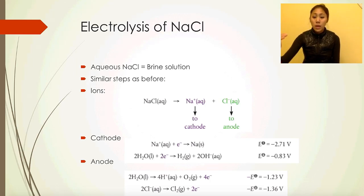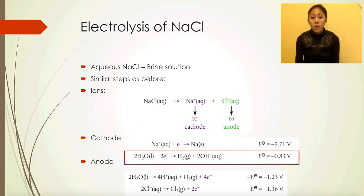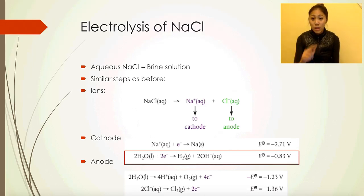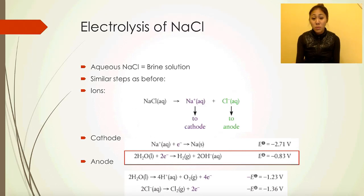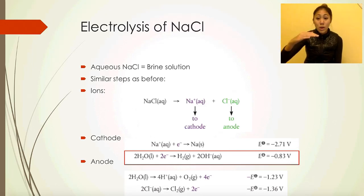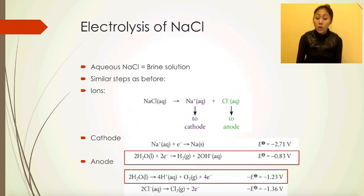Cathode reduction is near the bottom of the reactivity series, which becomes more positive. Comparing sodium and water, we give water the chance to approach the cathode. For the anode, in front of the standard electrode potential E there's a negative sign — multiplied by negative 1 because all standard electrode potentials in data booklet table 24 are in reduction form. To get oxidation, we flip it, multiplying by negative 1. Before flipping, oxidation occurs up top where values are more negative. After multiplying by negative 1, water again occurs at the anode.